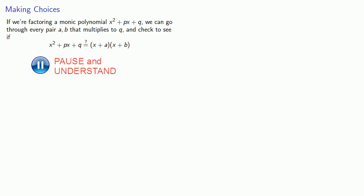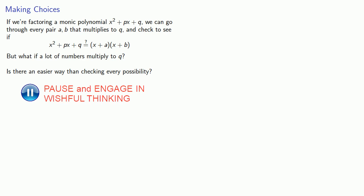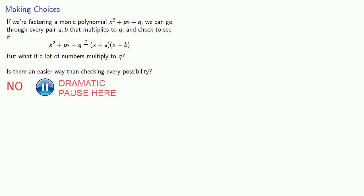We might ask the following question: if we're factoring a monic polynomial, we can go through every pair a, b that multiplies to q, our constant term, and see if our polynomial factors as x plus a times x plus b. But what if a lot of numbers multiply to q? Is there an easier way than checking every possibility? No. But we might be able to make better choices.